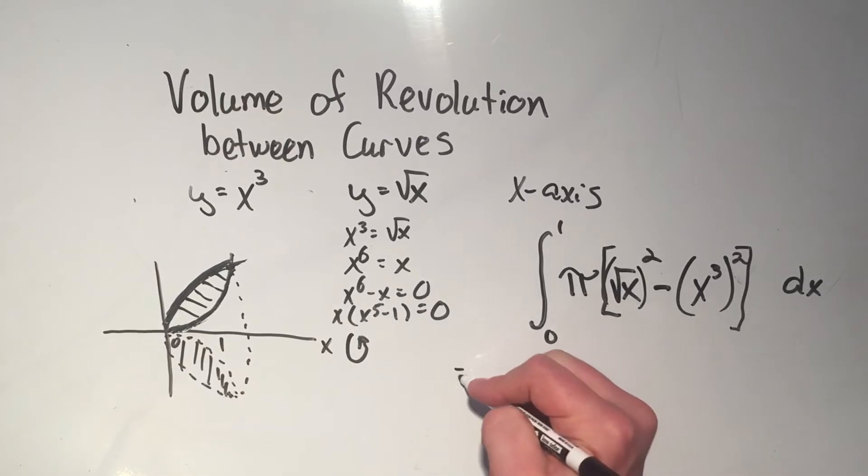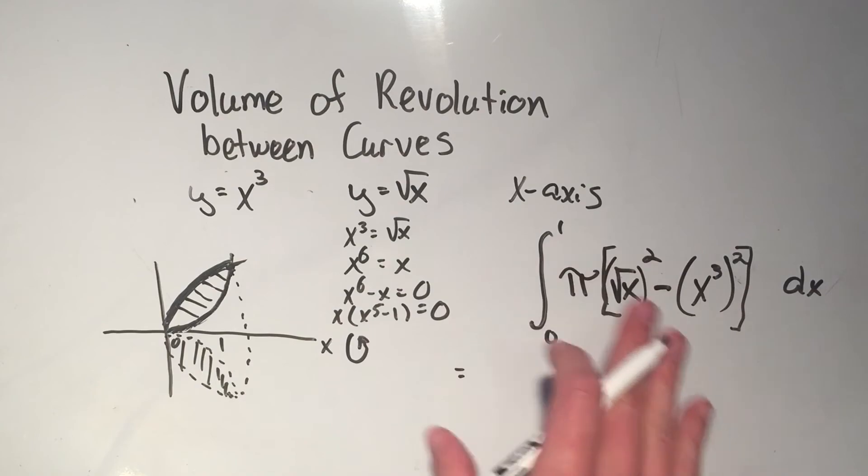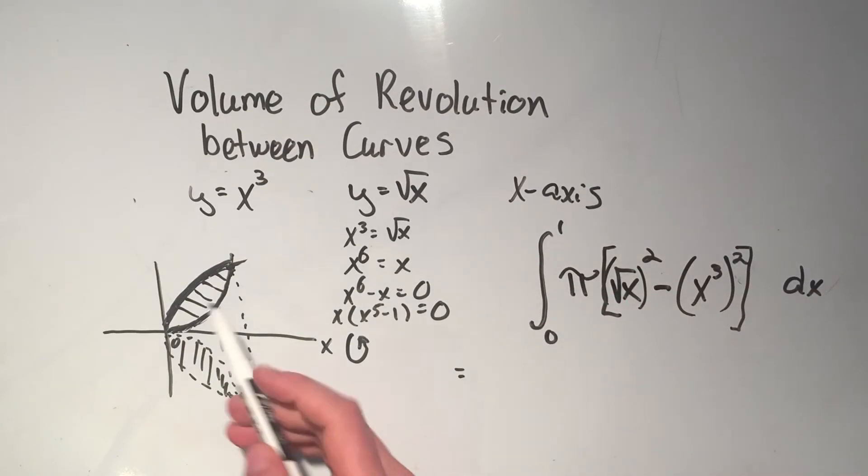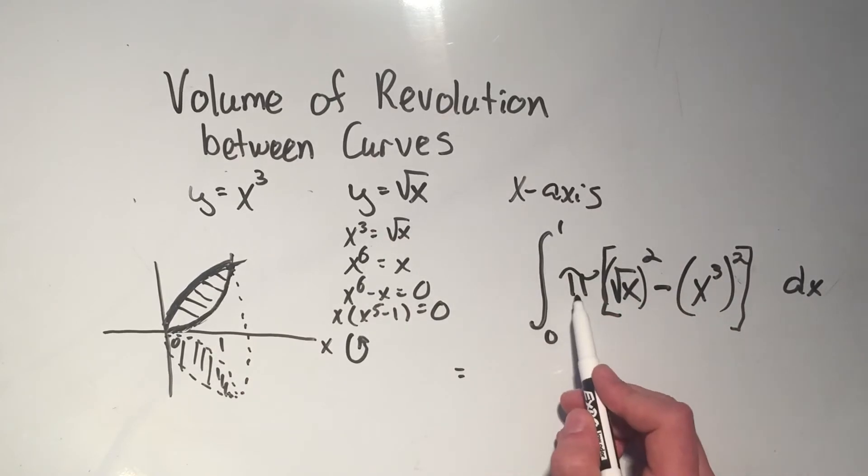Now I can simplify this. And if you're at all confused about this, go ahead and restart the video or just go back to where the formula is. But all it is, it's the top squared minus the bottom squared. Or if I was revolving around the y-axis, I'd do the right squared minus the left squared. Now this is still a pretty simple integral to solve. Pi is a constant, so I'm going to pull it out front. And I can clean up the inside.